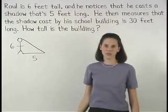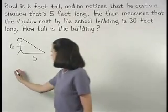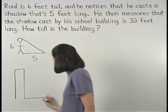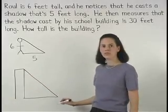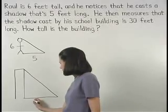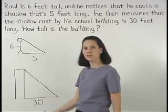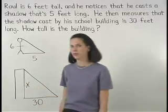Next, let's draw a picture of the school building and its shadow. We know that the shadow cast by the school building is 30 feet long and we're asked how tall the building is, so we can use X to represent the height of the building.